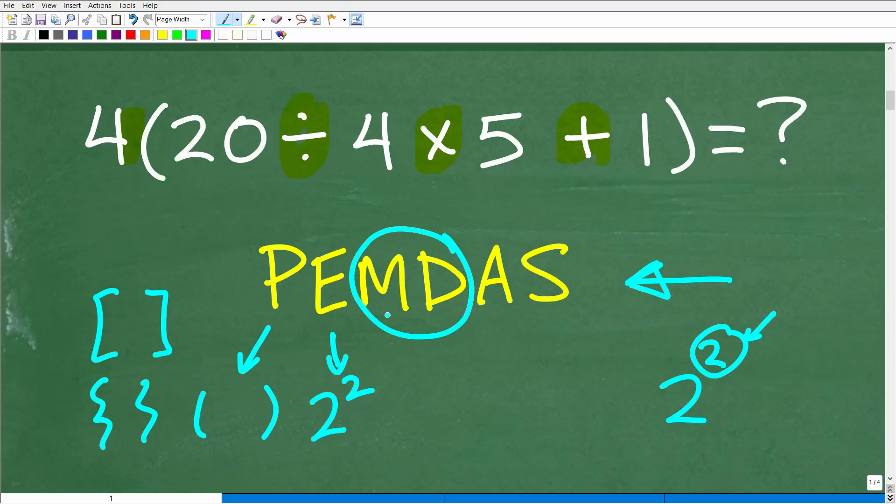So you're going to do multiplication or division, whatever comes first from left to right. So if you see multiplication, then division from left to right, you're going to do multiplication, then division. But if you see division and then multiplication, you're going to do the division next and then the multiplication. And you can see that's the situation we have at hand.